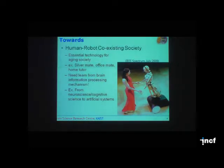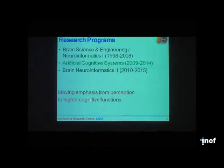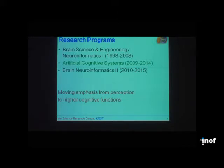This is a picture I borrowed from IEEE Spectrum showing the future society of human-robot coexistence. We'd like to come up with something that lives together with humans, so this machine should have human-like intelligence. I'll talk about three different research programs — the first one we have done for the last ten years, and the others are just starting. We have emphasized perception at this stage, but now we are moving to higher cognitive functions.